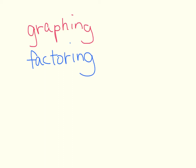Let me give you this example: x squared plus 16x minus 7. Now if we use our steps for factoring, we would ask what are the factors of a times c that add up to b? So we would be asking what are the factors of negative 7 that add up to 16? Well, there's only two factors for negative 7, and that is 1 times 7 — one of them would be a negative number. But 1 plus 7 gives you 8, and 1 minus 7 gives you negative 6, so there's no way to combine those factors to get that middle term.